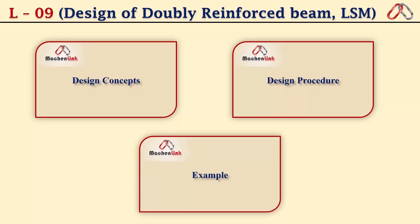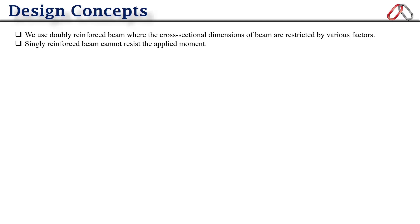So now begin with the first part, that is design concept. As I explained you earlier, we use doubly reinforced beam where the cross section dimensions of beam are restricted by various factors and where singly reinforced beam cannot resist the applied moment. So in doubly reinforced beam we provide tension as well as compression reinforcement. As you know that we provide stirrups in beam. The important point here is that stirrups either may be open like this or they may be closed.